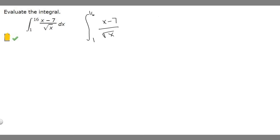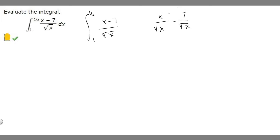We can rewrite this as x over the square root of x, minus 7 over the square root of x. What we want to do is use one of the rules of exponents: if we have a variable with the same base to an exponent, we can subtract the exponents.